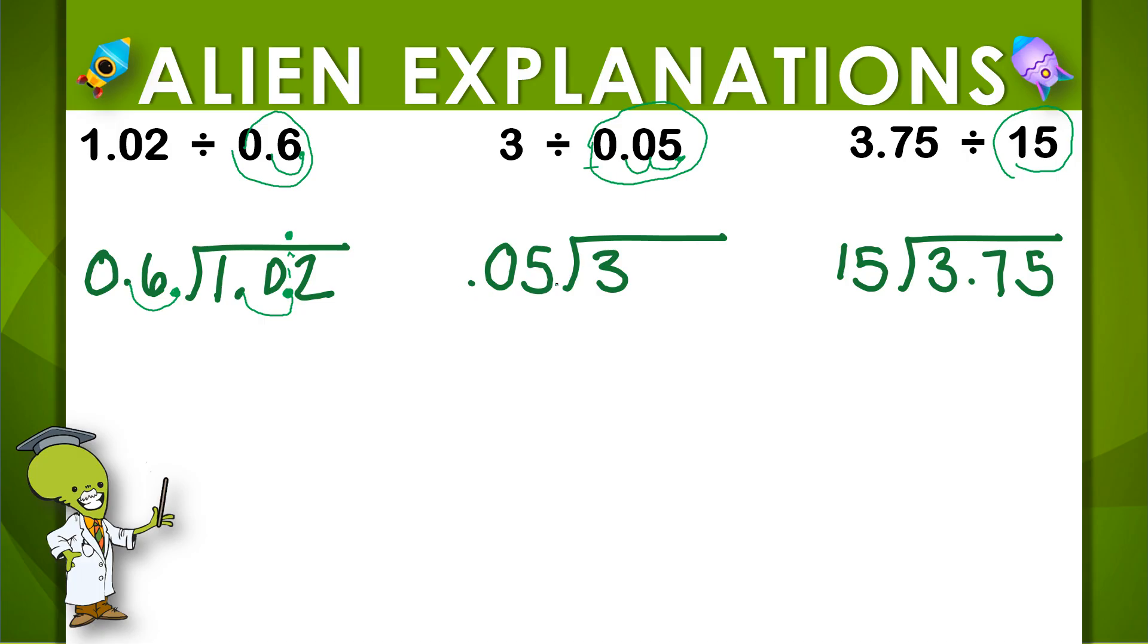So, if I multiply 5 hundredths by 100, I'd get 5. We also have to multiply 3 by 100, which would make it 300.